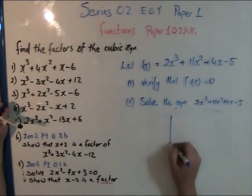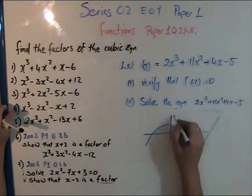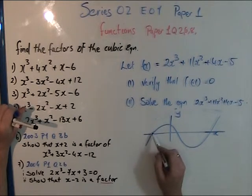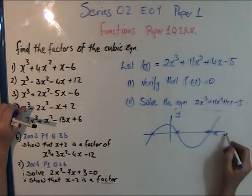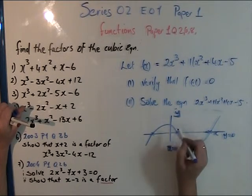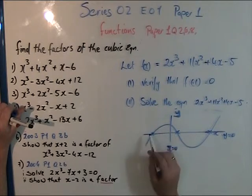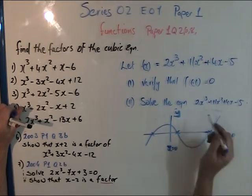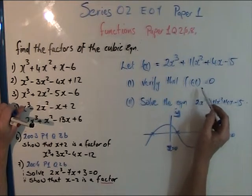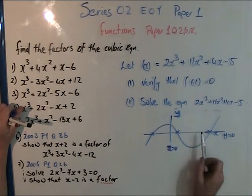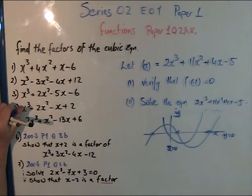A cubic equation cuts the x and y axes at three points. Remember: along the x-axis, y = 0, and along the y-axis, x = 0. So when you're solving equations and it says 'solve f(x) = 0', you make the cubic or quadratic equation equal to zero and find the values of x where the graph crosses the x-axis.